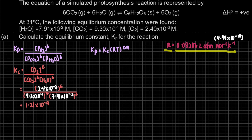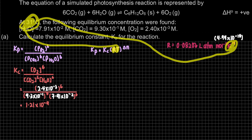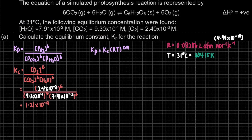You can refer to the list of constants for R. For temperature T, the question gives 31 degrees Celsius. Since R uses units of per Kelvin, we must convert: adding 273.15 gives 304.15 Kelvin. That is our value for T.